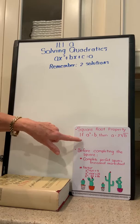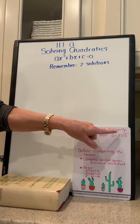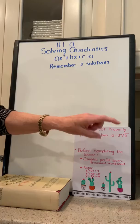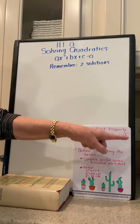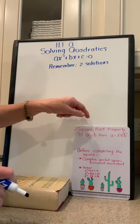The first thing that we're going to do today is the square root property. I've got it down here on this little board. The square root property says that if a squared is equal to b, then you're going to take the square root of both sides, and a is equal to plus or minus the square root of b. That's how you get your two solutions — the positive solution and the negative solution.